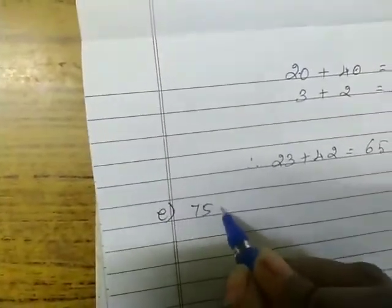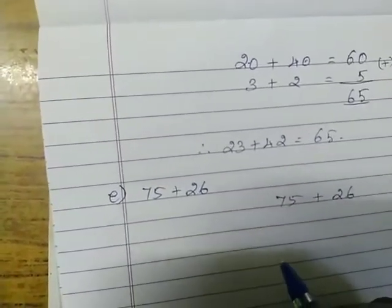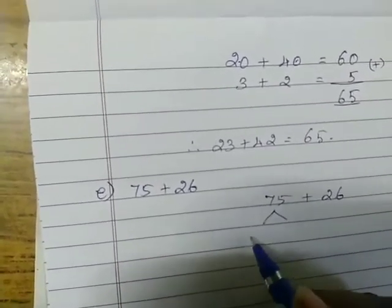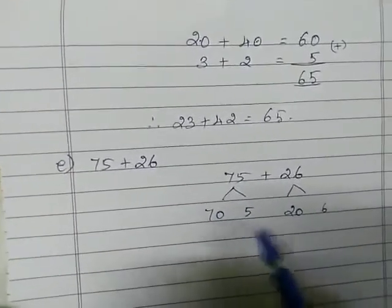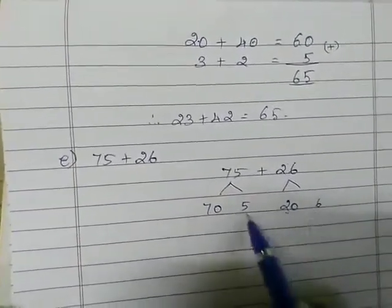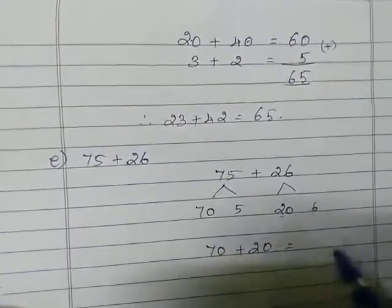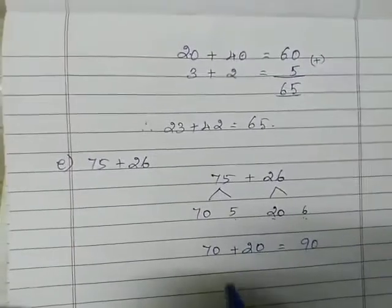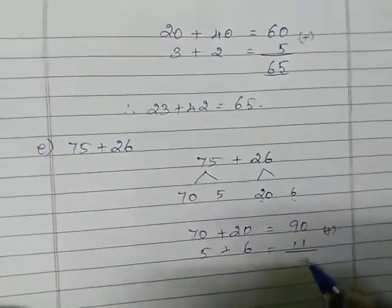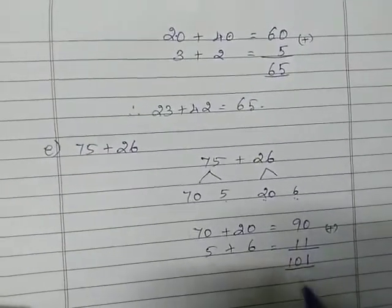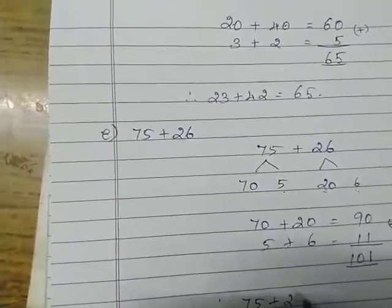75 plus 26. First step, take and write the question, then break up both numbers. 75 breaks into 70 and 5; 26 breaks into 20 and 6. Next step: take and write the tens digits — 70 plus 20 equals 90. Then take and write the 1s digits: 5 plus 6 equals 11. Add directly: 0 plus 1 is 1, and 9 plus 1 is 10. So 75 plus 26 equals 101.